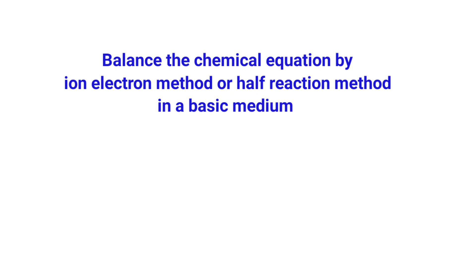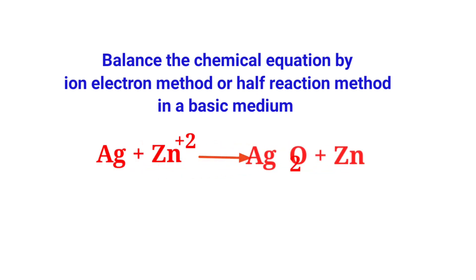Balance the chemical equation by the ion electron method, or half reaction method, in a basic medium. The equation is: Ag⁺ + Zn → Ag₂O + Zn²⁺.